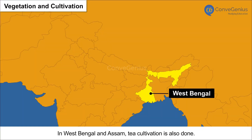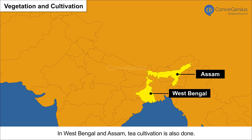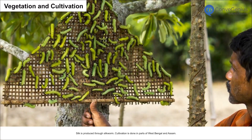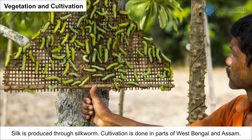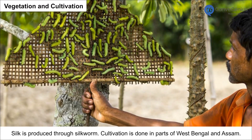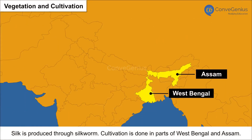In West Bengal and Assam, tea cultivation is also done. Silk is produced through silkworm cultivation in parts of West Bengal and Assam.